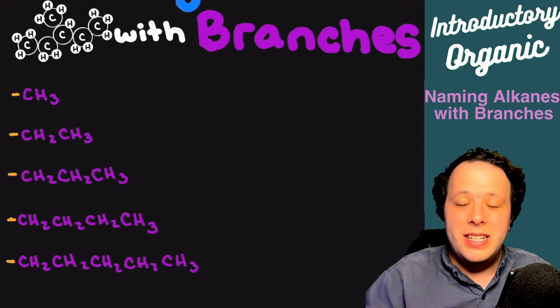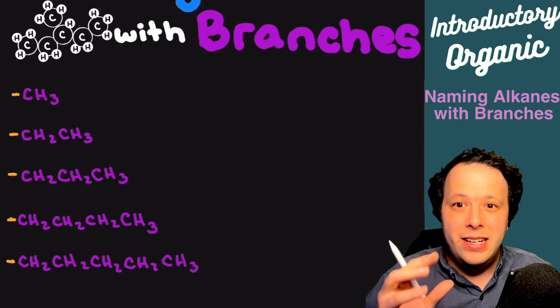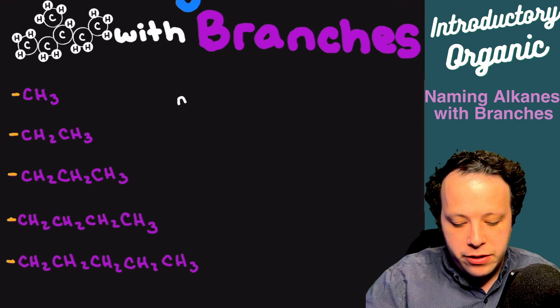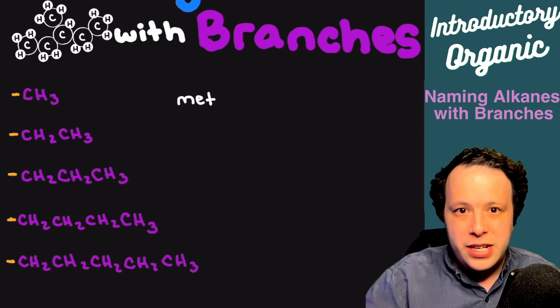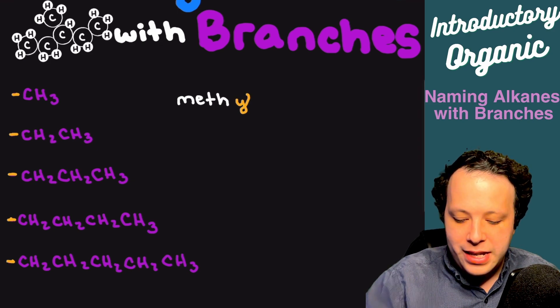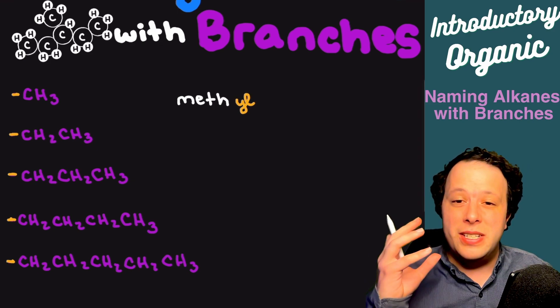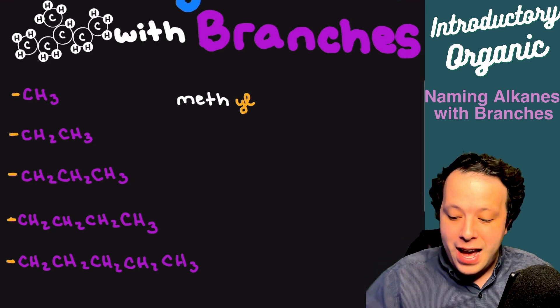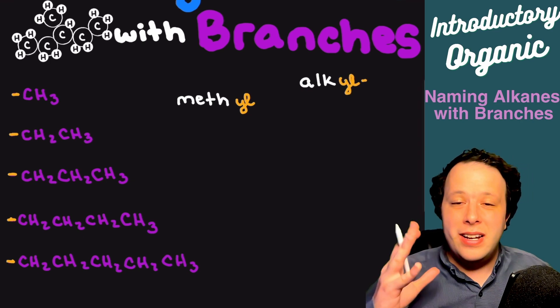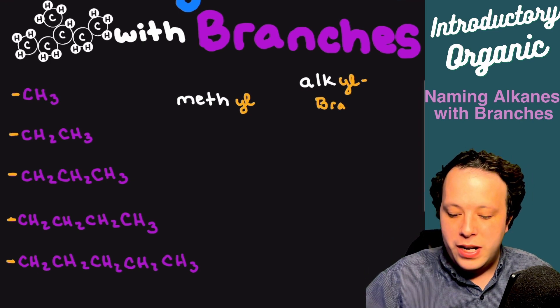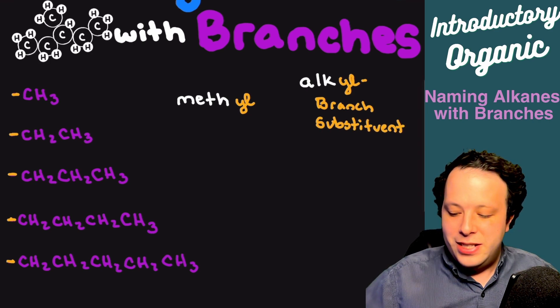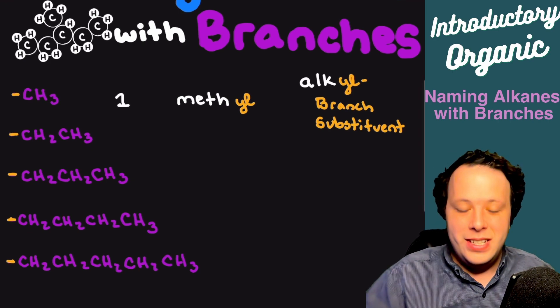The good thing is we're doing this systematically, so it all comes down to how many carbons are there within a given chain. Most of your different branches are generally very small, typically they don't go above five carbons, but it is possible to get larger than this. When it comes to these, if you think of one carbon alkane you think methane. You're taking the prefix, which is that meth part of it, and then adding the suffix, which is the yl ending.